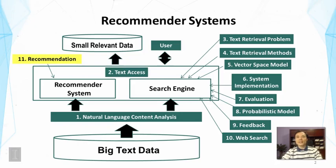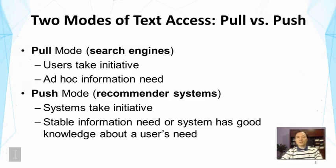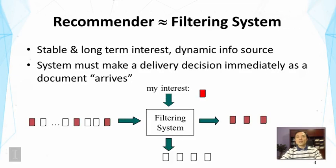This is a slide you have seen before, discussing the two different modes of text access: pull and push. Recommender systems are the main systems to serve users in the push mode, where the system takes initiative to recommend or push relevant information to the user. This works well when the user has a relatively stable information need and the system has good knowledge about what the user wants.